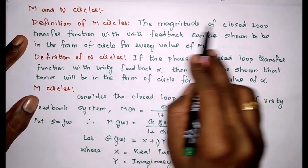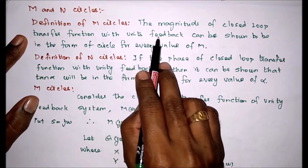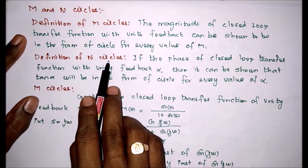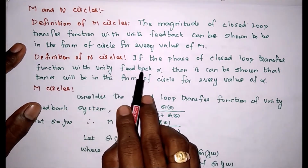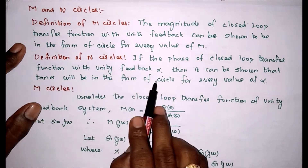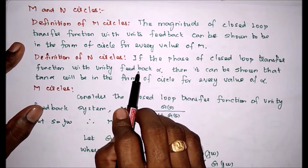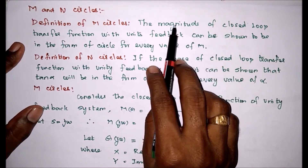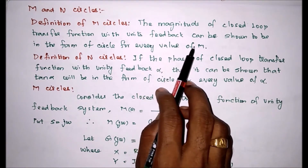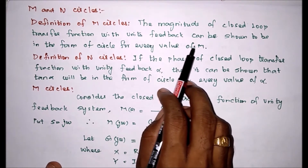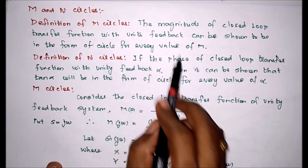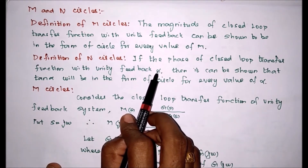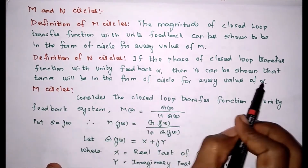The definition of M circle: the magnitude of the closed loop transfer function with unit feedback can be shown to be in the form of a circle for every value of magnitude — that is called the M circle. The definition of N circle: if the phase of the closed loop transfer function with unity feedback is alpha, then it can be shown that tan alpha can be in the form of a circle for every value of alpha — that is the N circle.